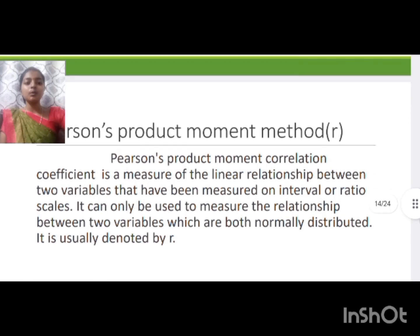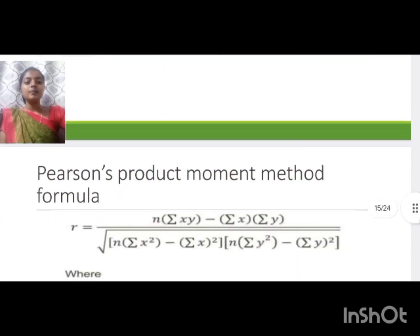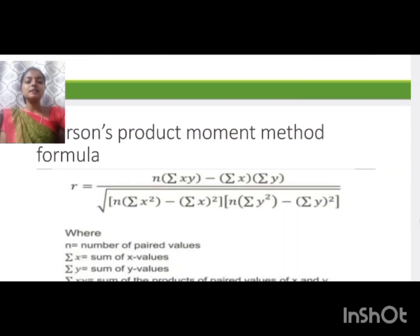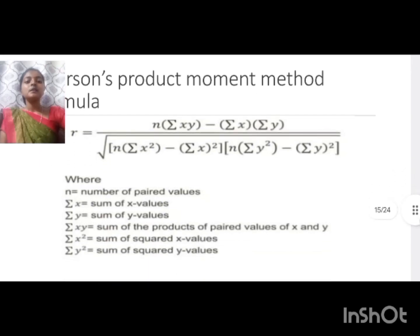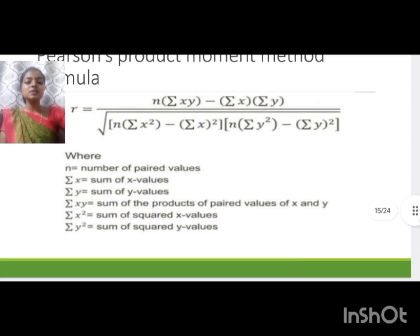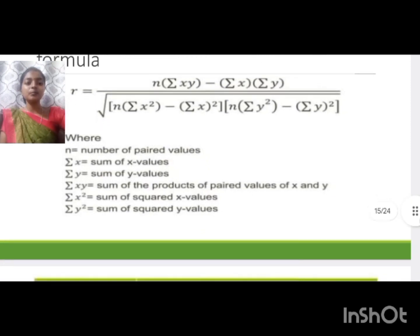The Pearson product moment method is also used to find the coefficient of correlation, and it is denoted by r. The formula is: r = (n·Σxy − Σx·Σy) / √[(n·Σx² − (Σx)²)(n·Σy² − (Σy)²)], where n is the number of paired values, Σx is the sum of x values, Σy is the sum of y values, and Σxy is the sum of the products of paired values of x and y.